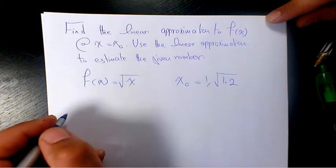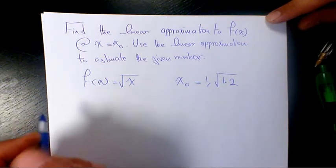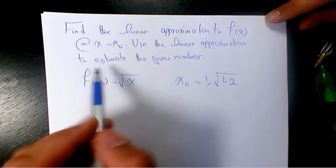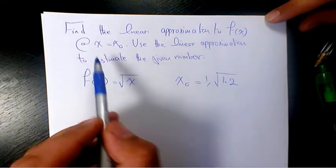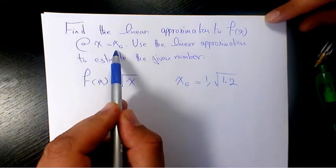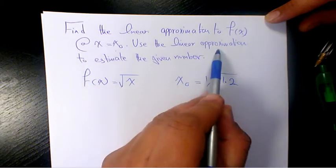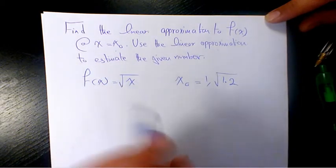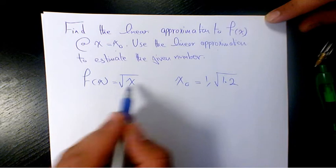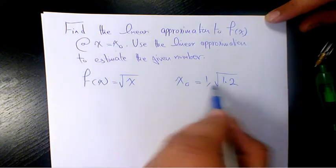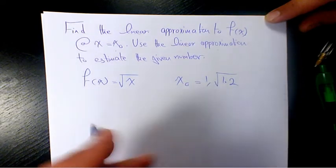What's up guys, this is Massey. Welcome to another video. In this video I want to show you how to find the linear approximation to f of x at x equals x naught, using the linear approximation to estimate the given number. So the function is square root of x at two different points, one and square root of 1.2.